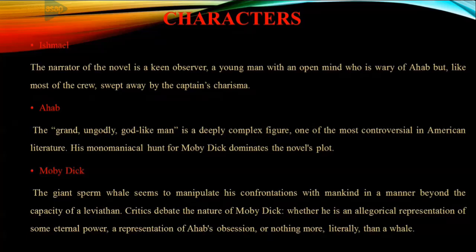Now let's look at the character sketch. The ships mentioned in the novel include the Pequod, where Ahab and his crew sail. Ishmael is the narrator. Ishmael and Queequeg have a close friendship. Daggoo, Tashtego, and Queequeg are harpooners. Fedallah is secretly brought aboard by Ahab. Starbuck, Stubb, and Flask are mates. Pip is a boy very much attached to Ahab.